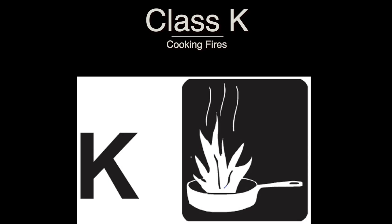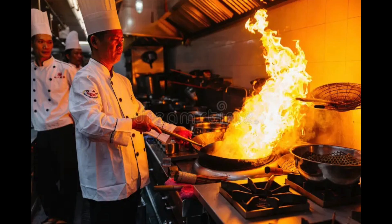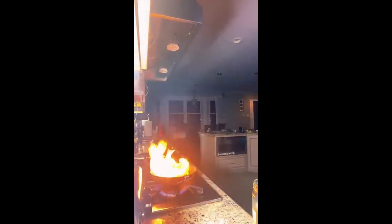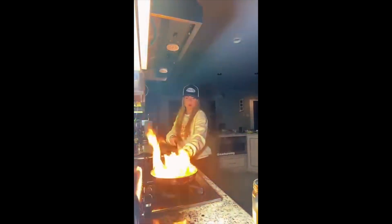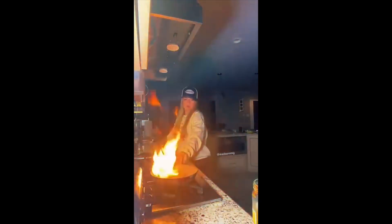Class K, or Class F fires in the EU, are basically a subclass of Class B, distinguished by their higher flashpoints, and are caused by the combustion of cooking oils, grease, or fats. These are an extremely common type of fire, frequently occurring in commercial and residential kitchens alike.